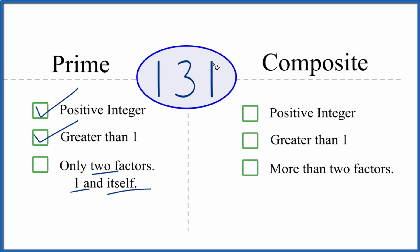We know that one times 131 equals 131, so there are two factors. But are there any more factors, numbers that go evenly into 131? Turns out there aren't. So there are only two factors, which means that 131 is a prime number. But is it a composite number? It's a positive integer.